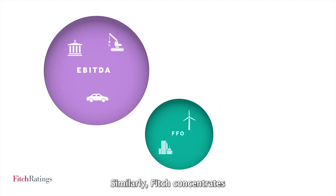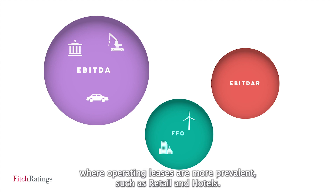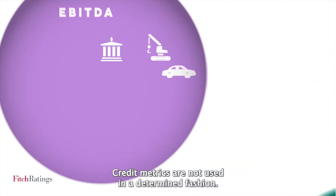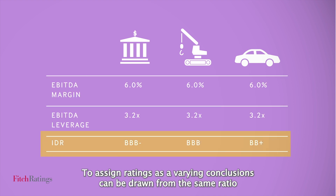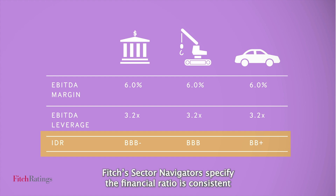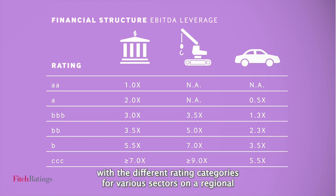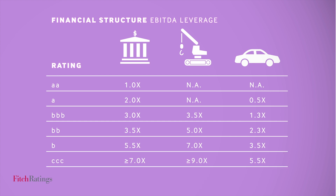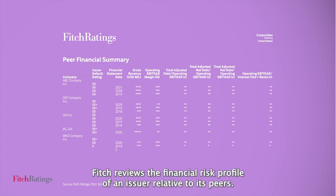Similarly, Fitch concentrates on EBITDA-based credit metrics in select sectors where operating leases are more prevalent, such as retail and hotels. Credit metrics are not used in a determinate fashion to assign ratings, as varying conclusions can be drawn from the same ratio depending on the sector under review. Fitch's sector navigators specify the financial ratios consistent with the different rating categories for various sectors on a regional or global basis. The financial projections are also used in comparative analysis, where Fitch reviews the financial risk profile of an issuer relative to its peers.